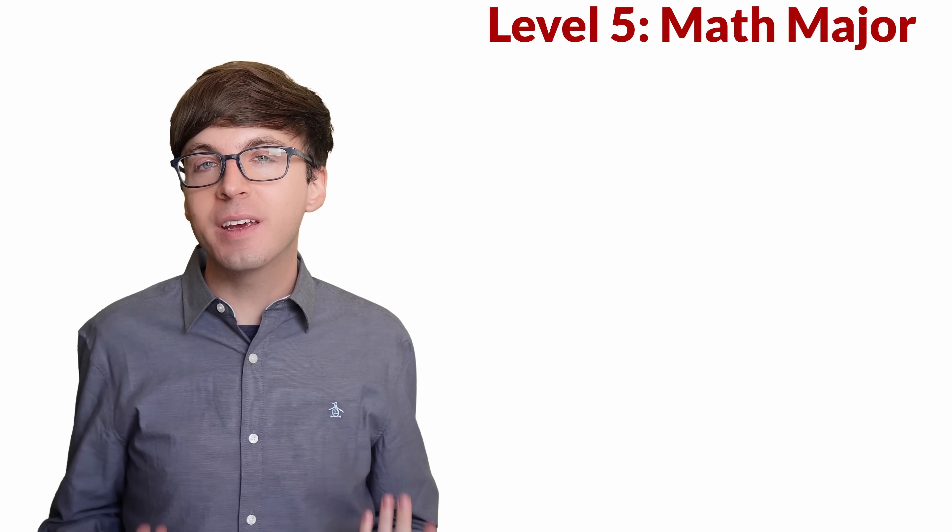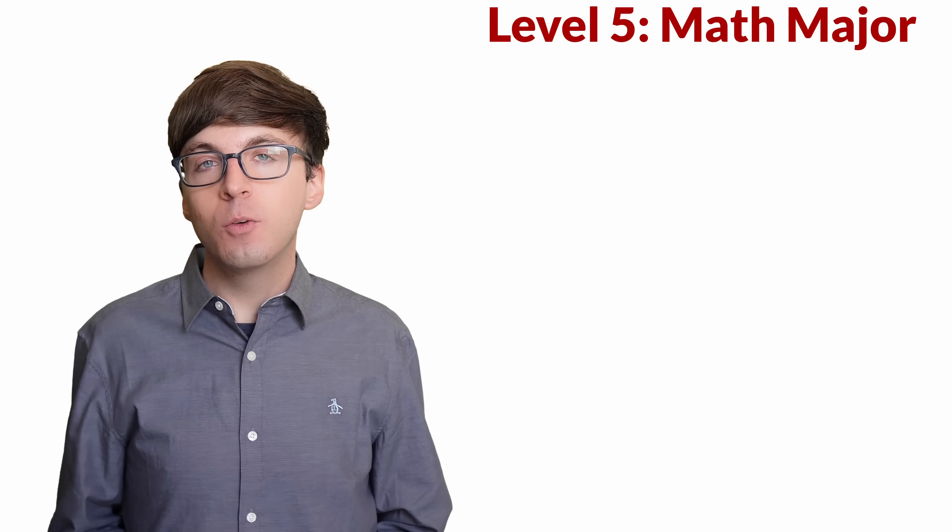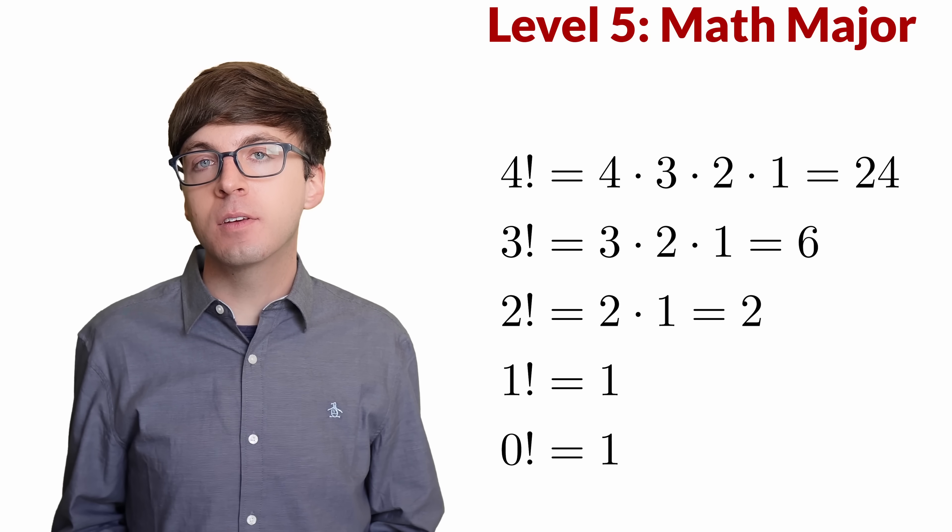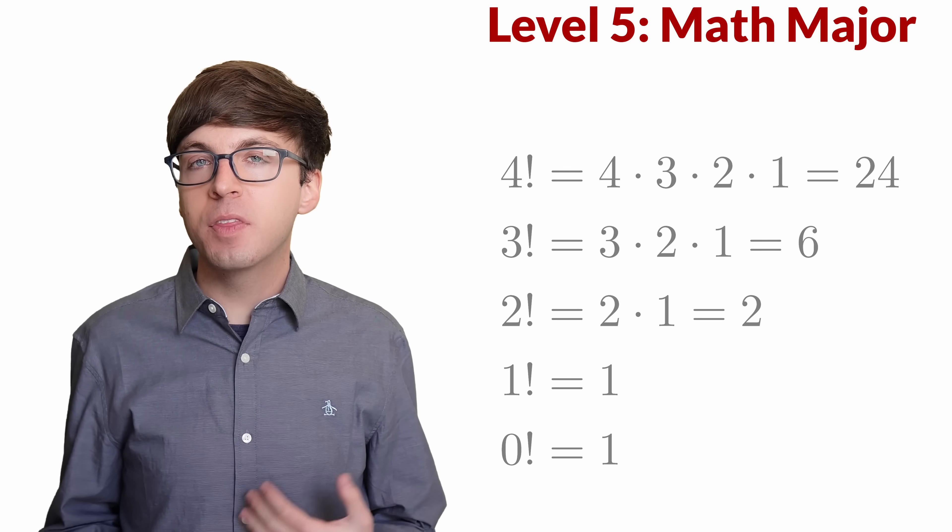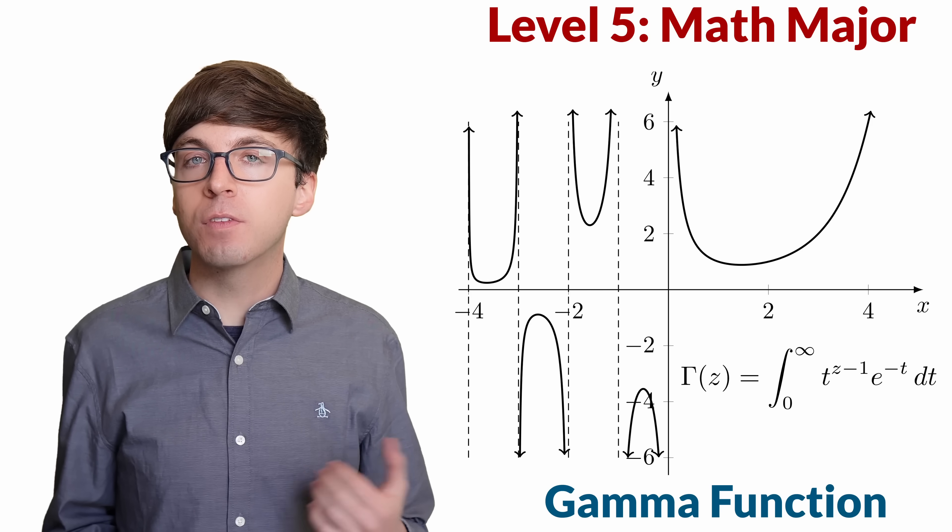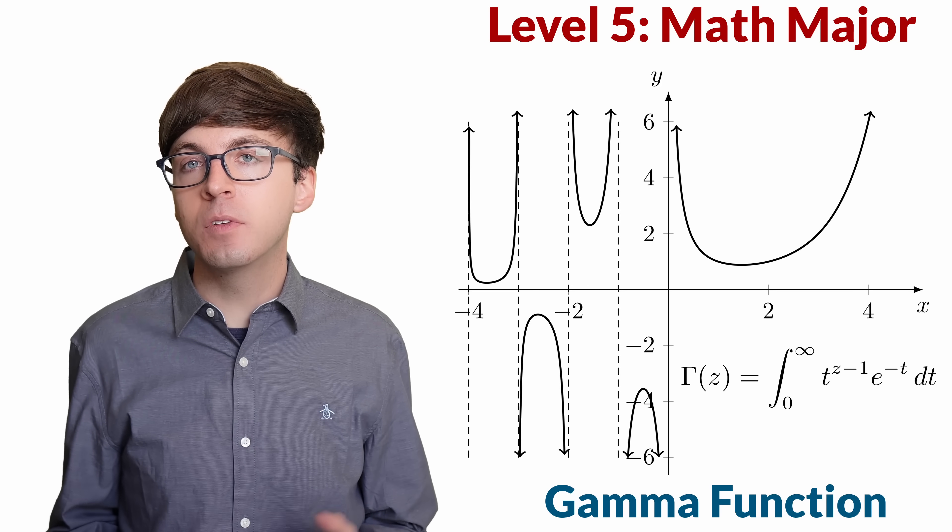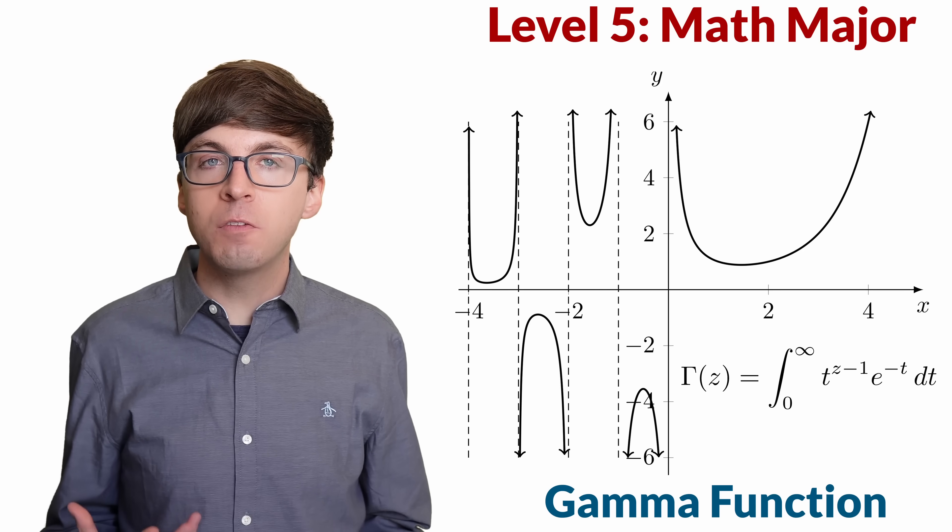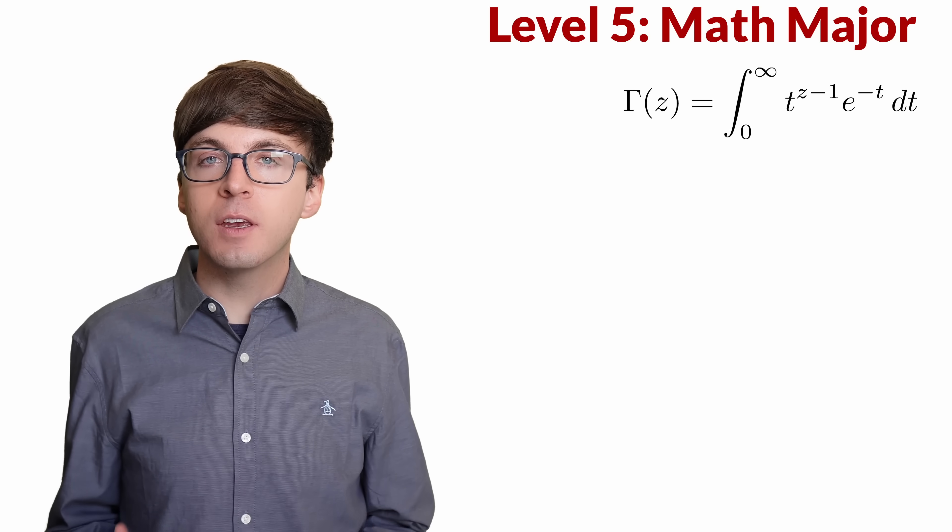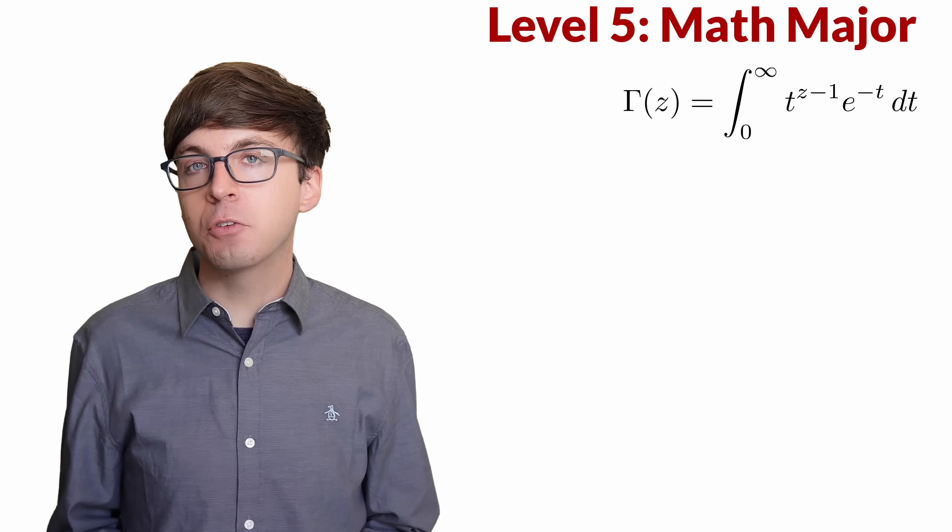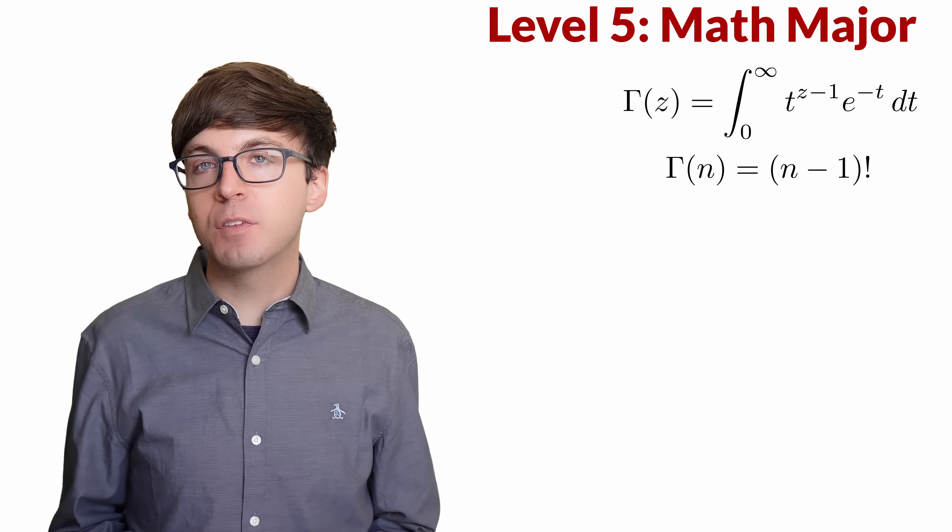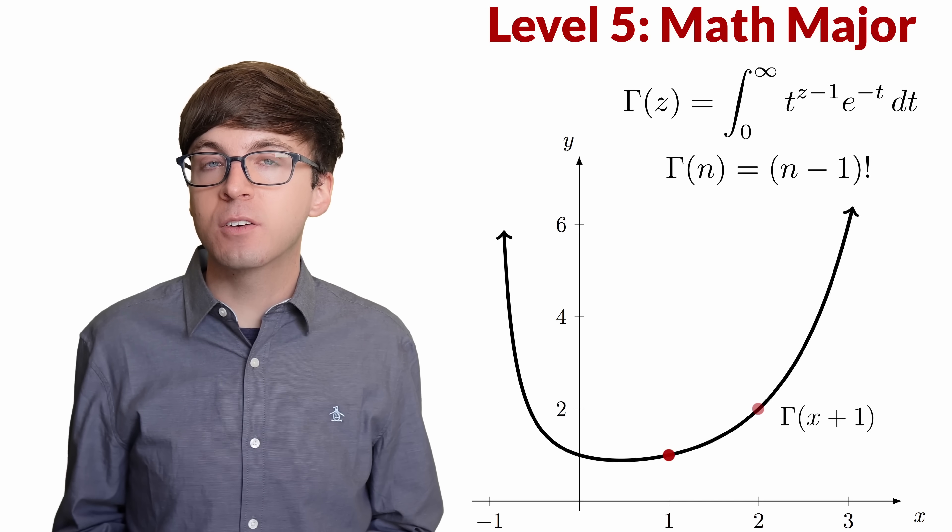For level 5, let's talk about extending factorials to real numbers. We'd like to find a function that matches the factorials for all the natural numbers, but also fills in the gaps in a nice continuous way. There are actually multiple ways to do that, but the most commonly used is called the gamma function. Gamma of z is defined to be the integral from 0 to infinity of t to the z minus 1 times e to the negative t dt. This means we'll find the area underneath that curve between 0 and infinity. If you've had some calculus, you can use integration by parts to check that for any natural number n, gamma of n equals n minus 1 factorial. If we graph the gamma function but shift it left by 1, then it lines up perfectly with the factorials of the natural numbers.